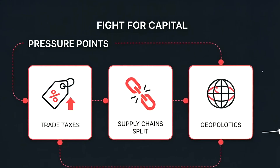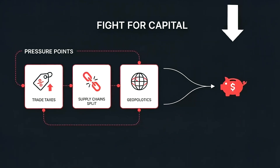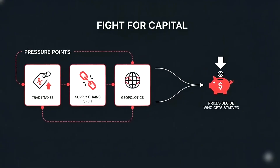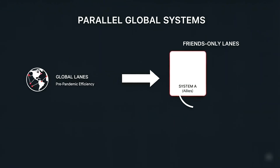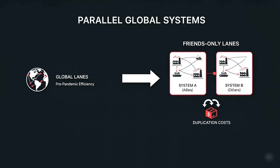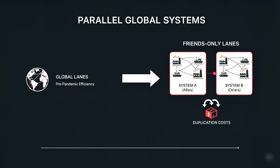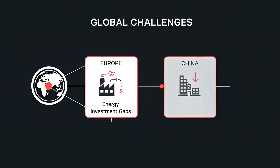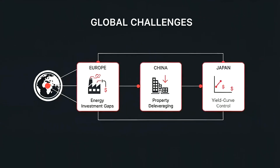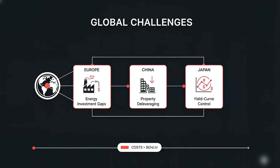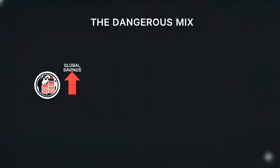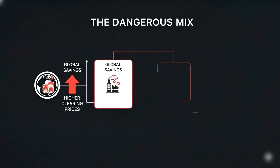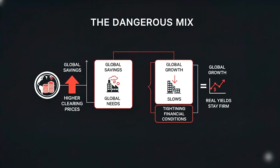Now the pressure builds in geopolitics. Trade taxes lift input prices. Supply chains split. Friends-only lanes replace global lanes — creating parallel systems and duplication. Duplication costs money before it pays off. Spread the lens beyond the US and the picture is the same. Europe faces energy investment gaps. China faces property deleveraging. Japan manages yield curve control. Global savings meet global needs at higher clearing prices. The result: real yields stay firm even as growth slows. That's the dangerous mix.